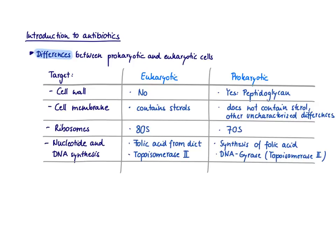So if you want to develop an antibiotic, it makes sense to first think about what are the major characteristics of bacterial cells — prokaryotic cells — and then contrast them to eukaryotic cells, to our human cells, and figure out what are the differences. Because in the end, you have to find something that is specific to bacteria and not seen in human cells. I've listed here the major differences between prokaryotic and eukaryotic cells, and these are also the major targets.